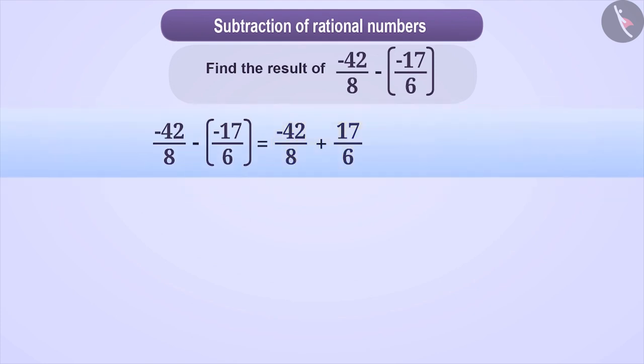Now we see that denominators of these two rational numbers are not equal. To make them equal, we use LCM. LCM of 8 and 6 is 24.